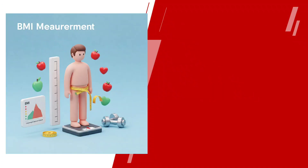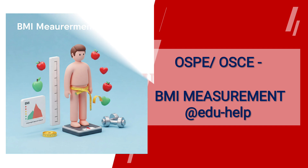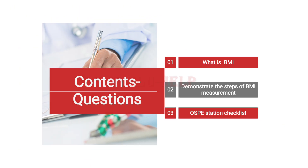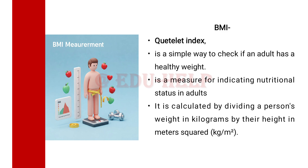Today's OSPI is BMI measurement. Students can have questions like: what is BMI, and demonstrate the steps to perform BMI measurement with certain OSPI station checklist. Students can answer that BMI, called the quetelet index, is a simple way to check if an adult has a healthy weight. It is a measure for indicating nutritional status in adults.